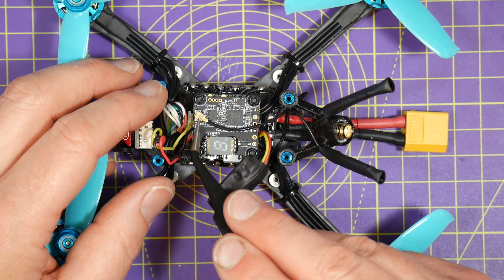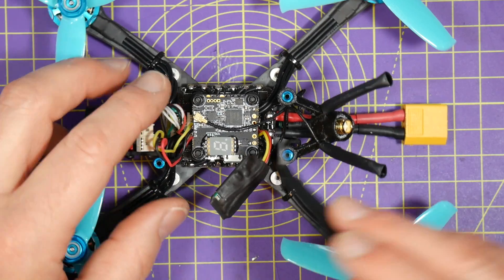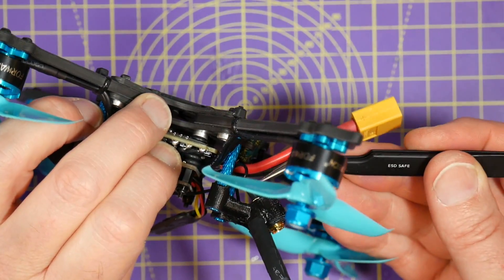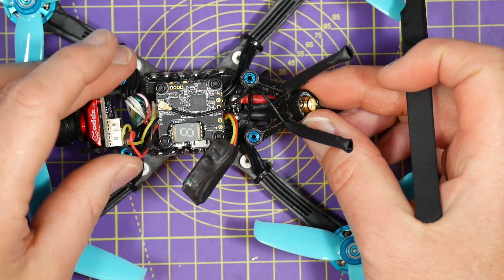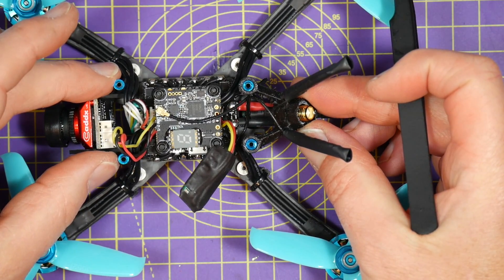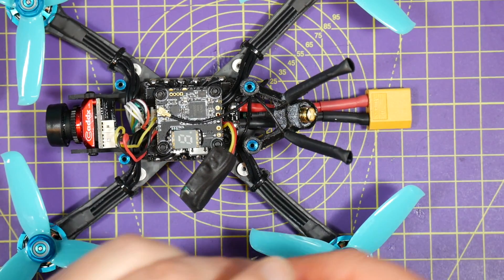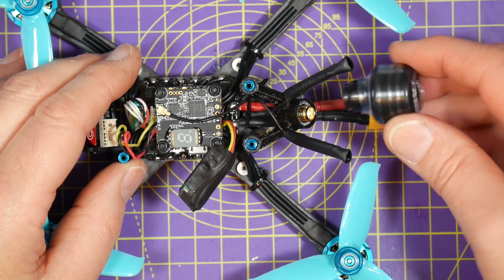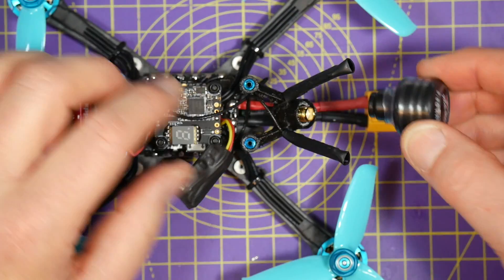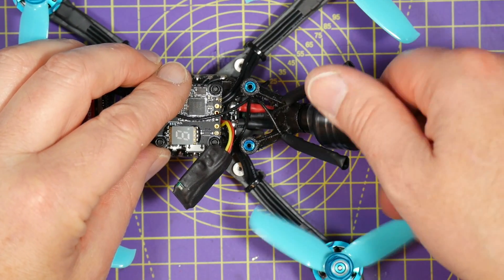So here's a good example. We've got a UFL connector there going along this pigtail here to an SMA which is pushed up through this TPU 3D printed bracket. And that means we can then take any SMA antenna. It's SMA because it's got the pin on it. And we can just screw that in.